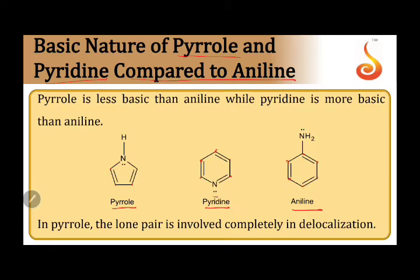To compare basic nature, we need to see which compound can easily donate its electron pair. In pyrrole, the lone pair of electrons on nitrogen is required for aromatic character — it is involved in the conjugation: pi bond, single bond, lone pair, single bond, pi bond. So conjugation is present due to this lone pair.